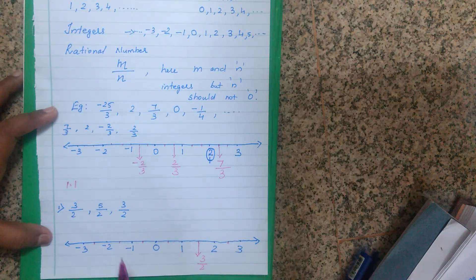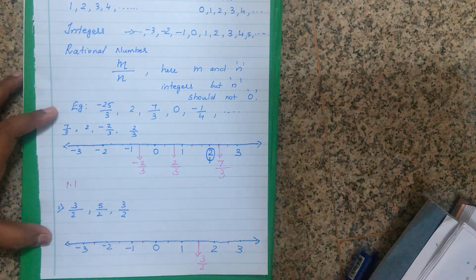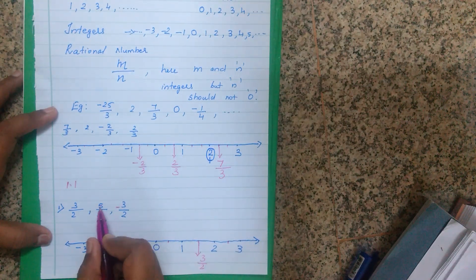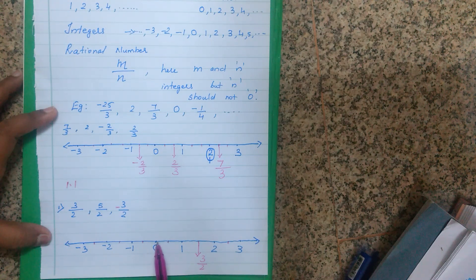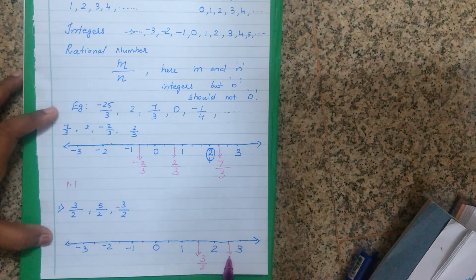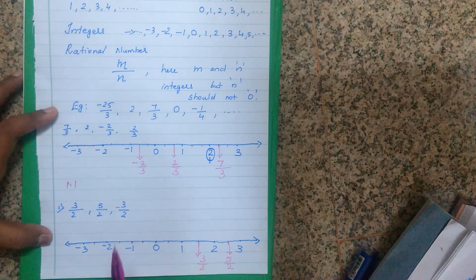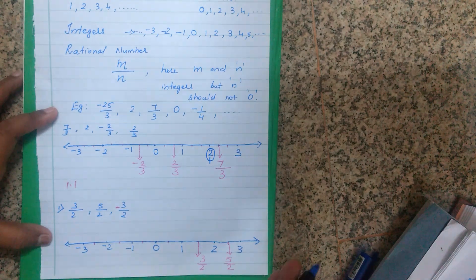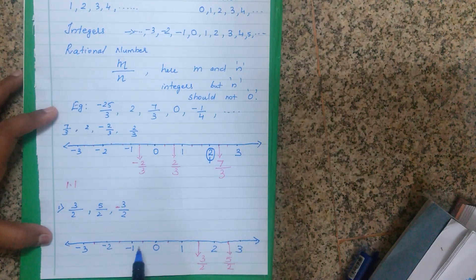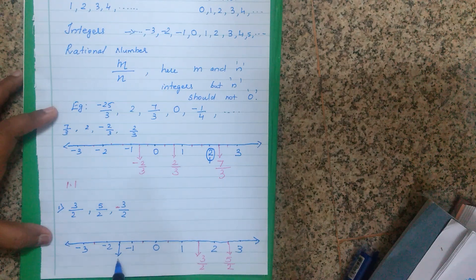Next, 5 upon 2 — count from 0: 1, 2, 3, 4, 5. That point is 5 upon 2. Then minus 3 upon 2 — which side? Left side. Count 3 from zero going left: 1, 2, 3. That point is minus 3 upon 2.